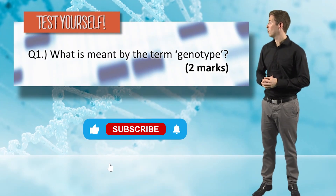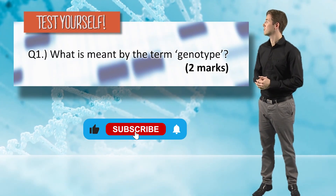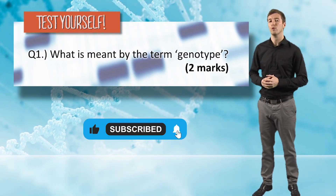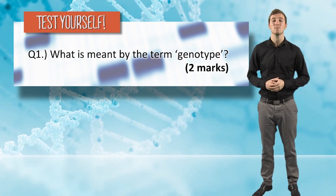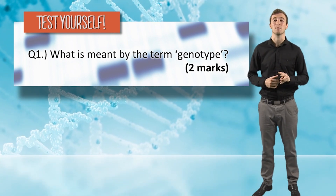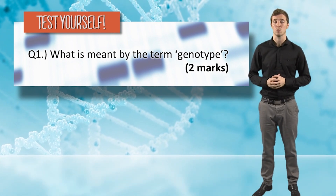Question one: What is meant by the term genotype? Worth two marks. This means you have to make two distinct marking points. Let's look at the first one.